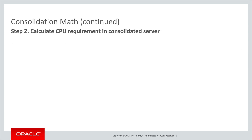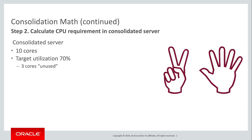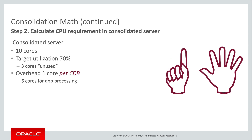Now let's consolidate into a bigger server. This one has ten cores, so we hold up ten fingers. It would be foolish to run this at the red line with 100% CPU load. Perhaps 70% is a better target. So we should take away three fingers, leaving seven remaining fingers, or cores, in effective use. Remember that with multi-tenant, there's a single shared set of background overheads, shared across all PDBs. So we take away that same single finger to account for the infrastructure.